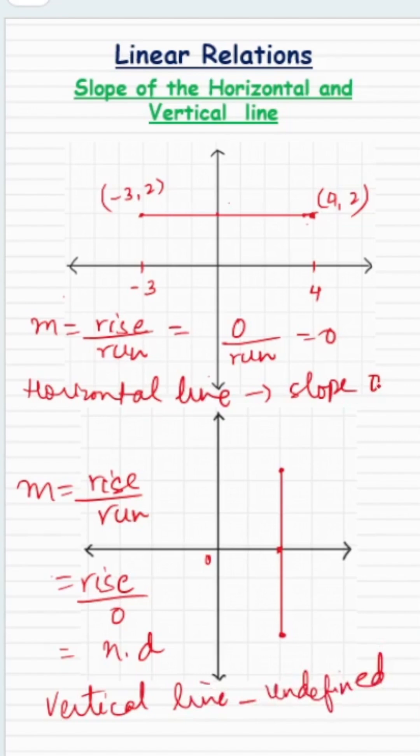So horizontal lines have the slope of 0 always because there is no rise, but vertical lines have undefined slope because there is no run. That's all. Bye-bye.